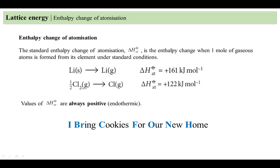For chlorine, we start from the diatomic element Cl₂ to form chlorine atoms in the gaseous state. Chlorine is naturally found as a diatomic gas. Diatomic elements can be remembered with the phrase 'I bring cookies for our new home': I (I₂), Br (Br₂), Cl (Cl₂), F (F₂), O (O₂), N (N₂), and H (H₂). All enthalpy changes of atomization are positive — they are endothermic.